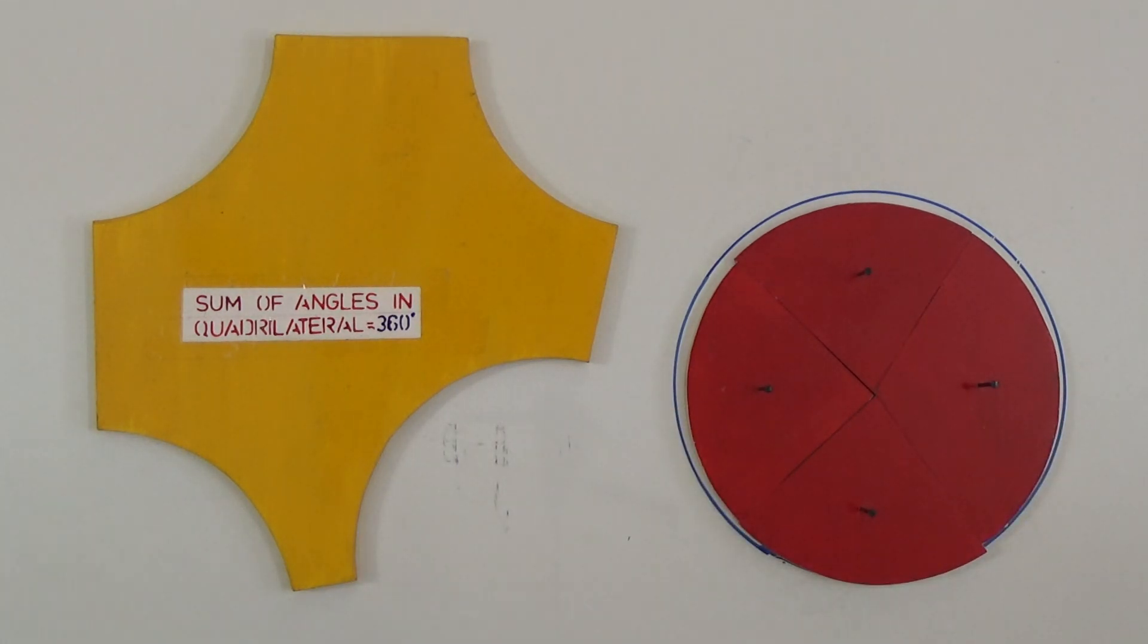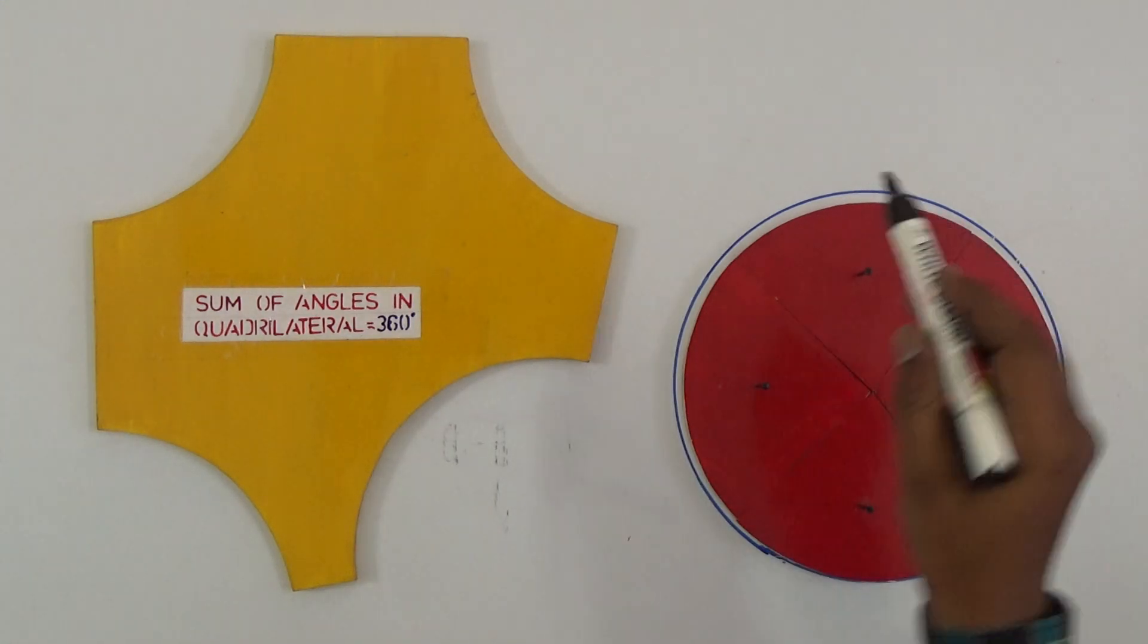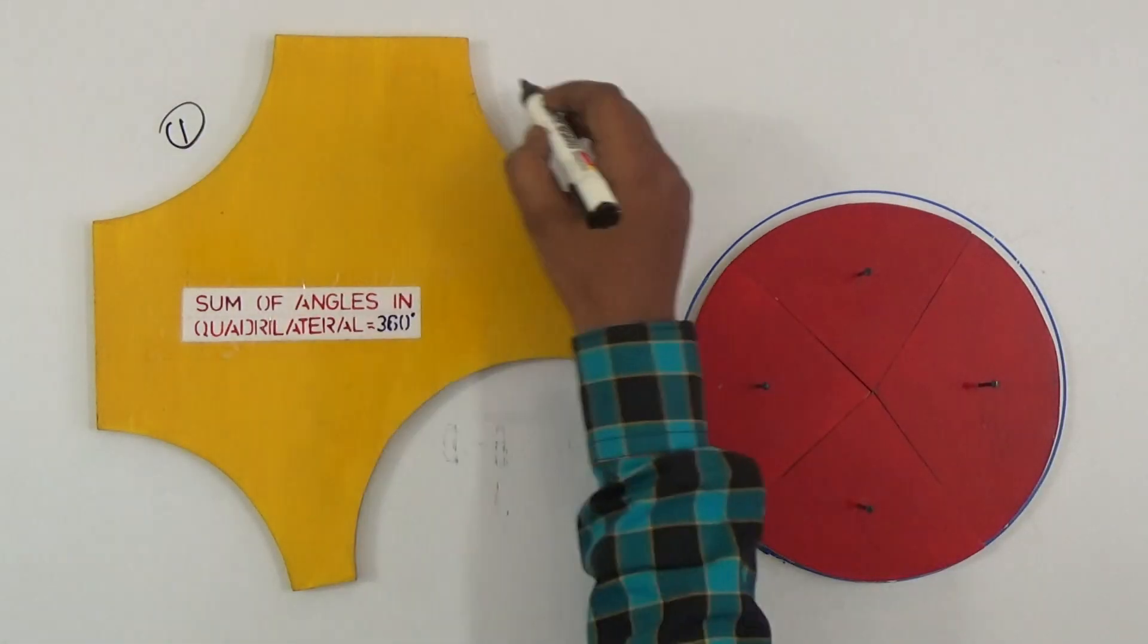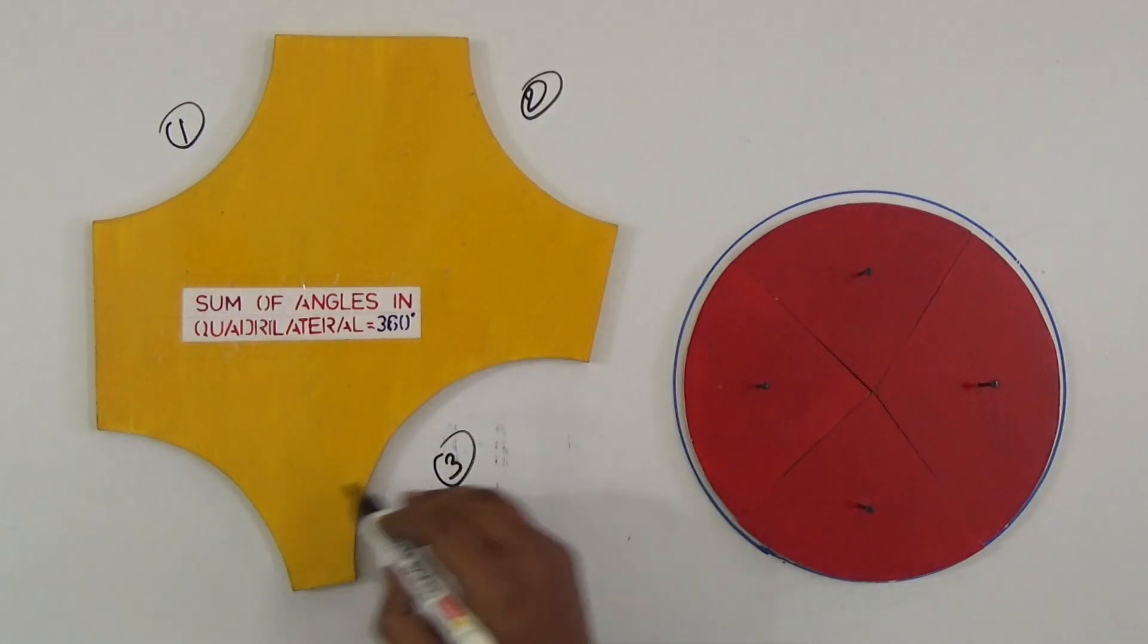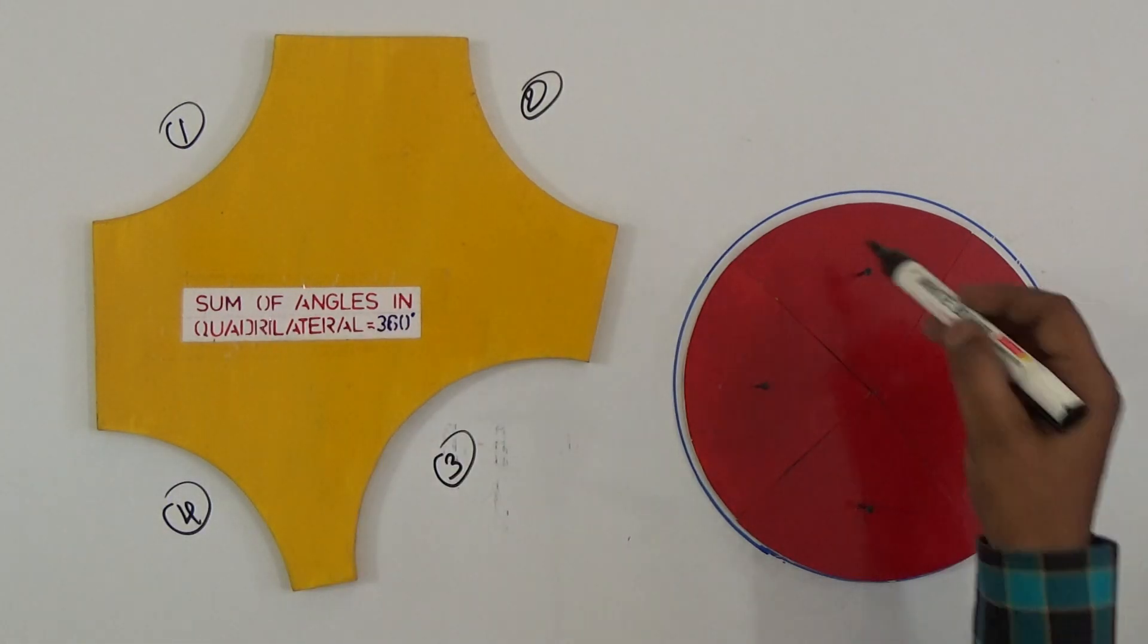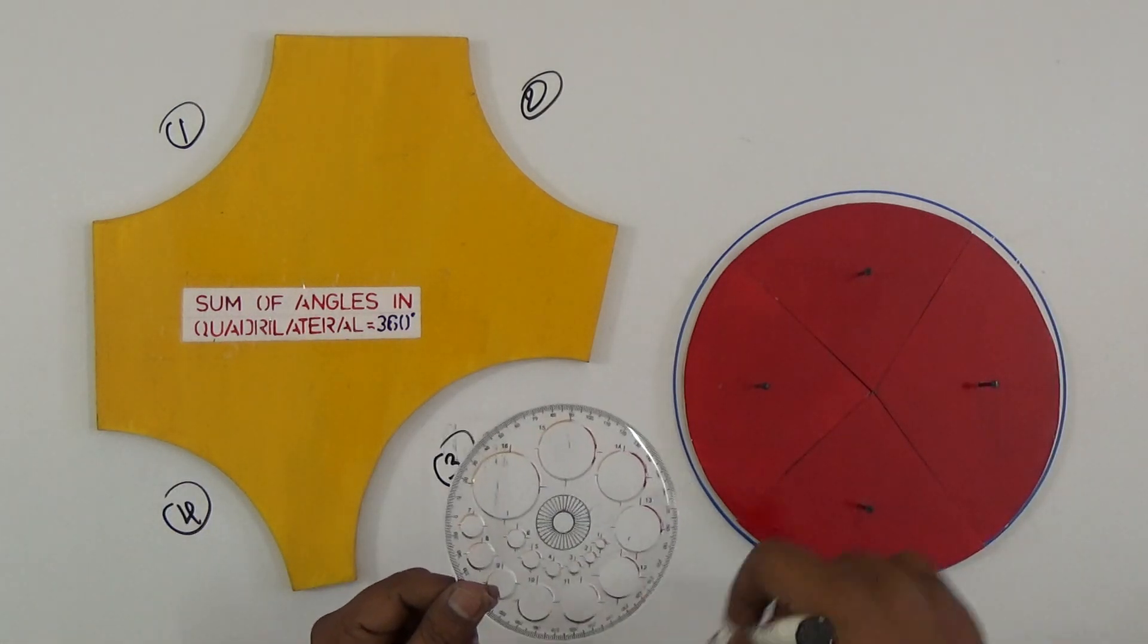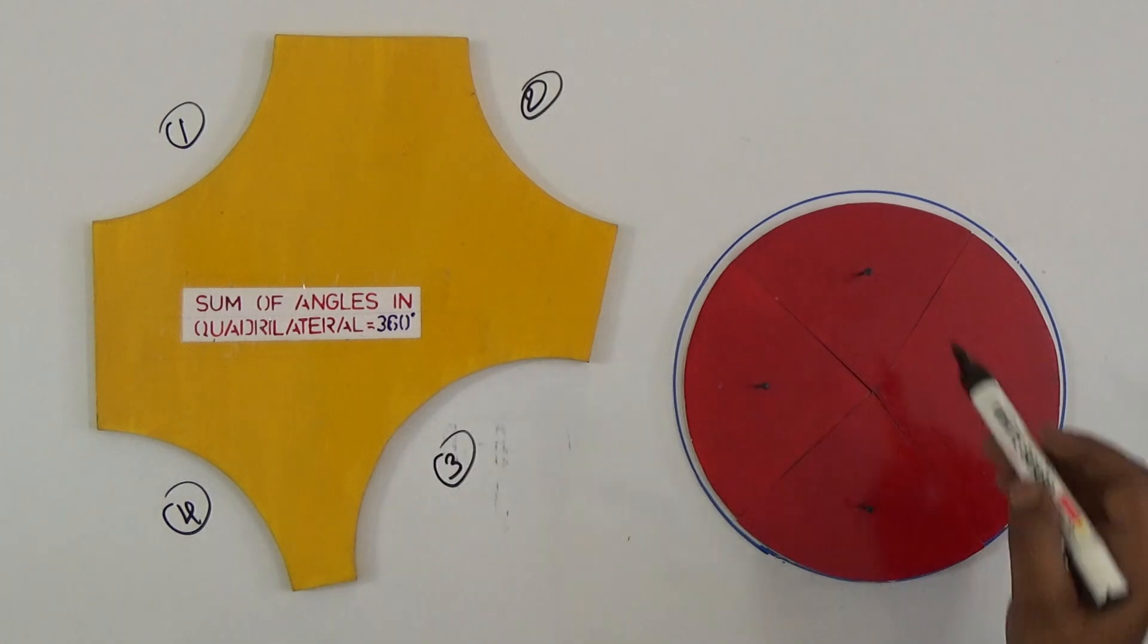Now it forms an exact circle shape with four angles: angle one, two, three, and four. So sum of the angles in a quadrilateral is 360, so you can prove. It forms a circular shape.